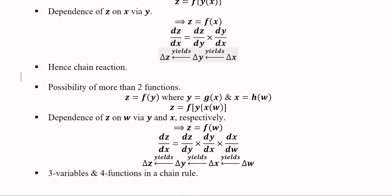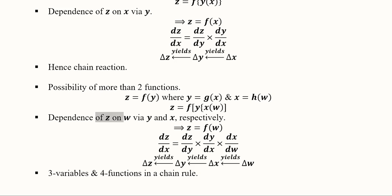The chain can go beyond two functions. For example, z can depend on y, y can depend on x, and x can further depend on w — giving us three functions and four variables. When combined, w determines x, x determines y, and y determines z. So w affects z via x and y, which we can call auxiliary variables.